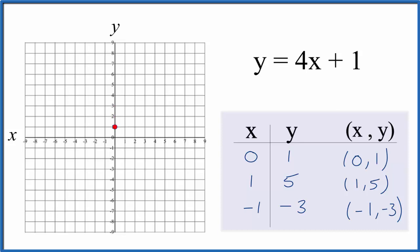That's our first point. We have x is 1, then y is 5, so we go up to 5. And our last point: negative 1 for x, negative 3 for y. So negative 1, and then down to negative 3.